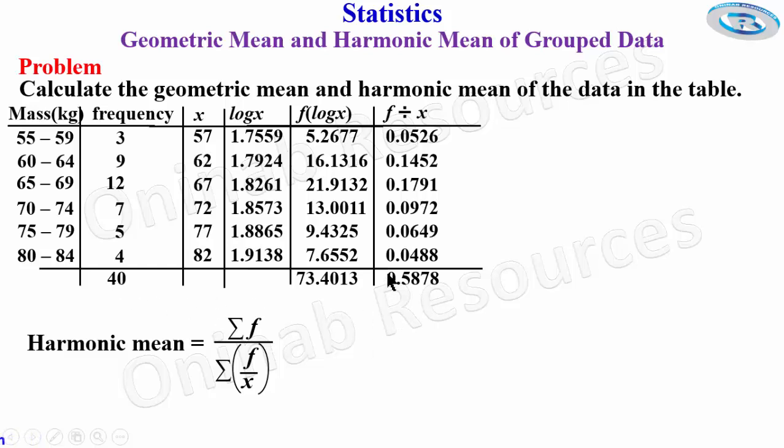We are going to substitute this 40 and 0.5878 into the formula for the harmonic mean. That's going to give us 40 which is summation of f over 0.5878 which represents the summation of f by x. Simplifying this from our calculator we have 68.05, also to four significant figures. And that's all for the calculation of harmonic mean.